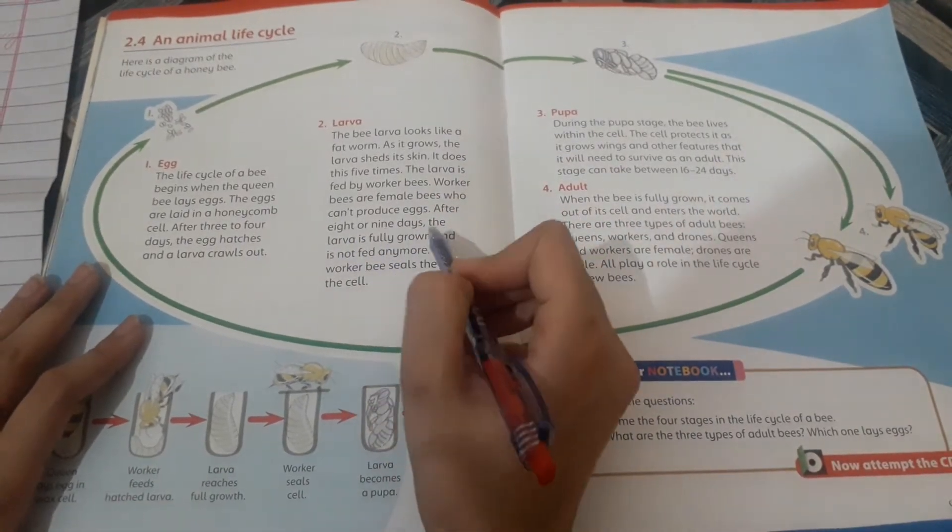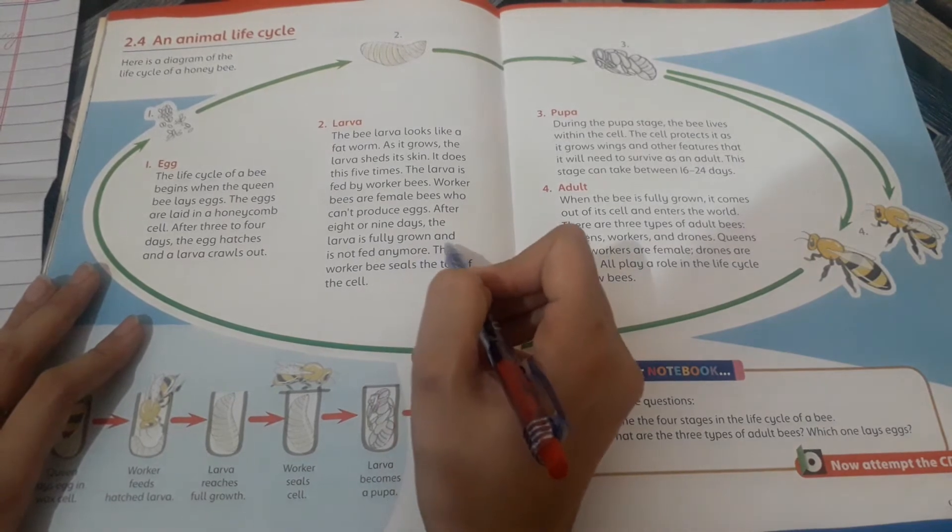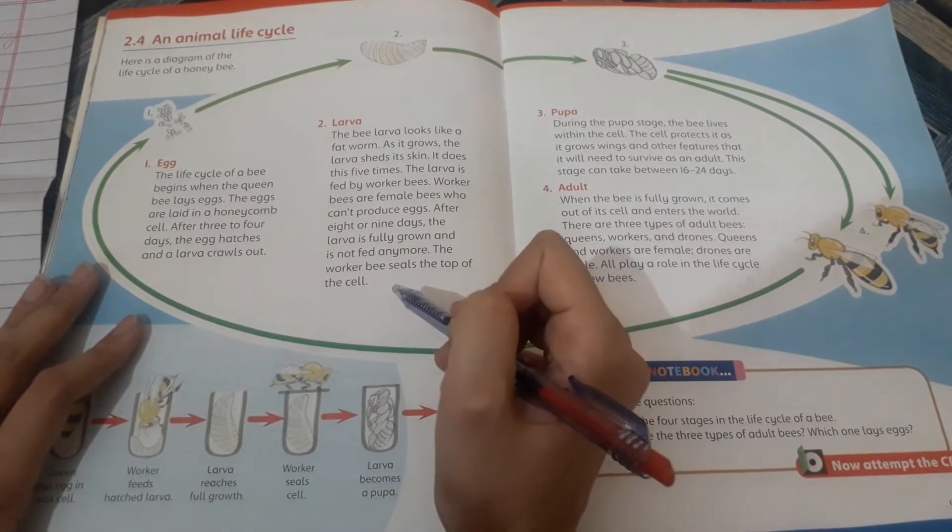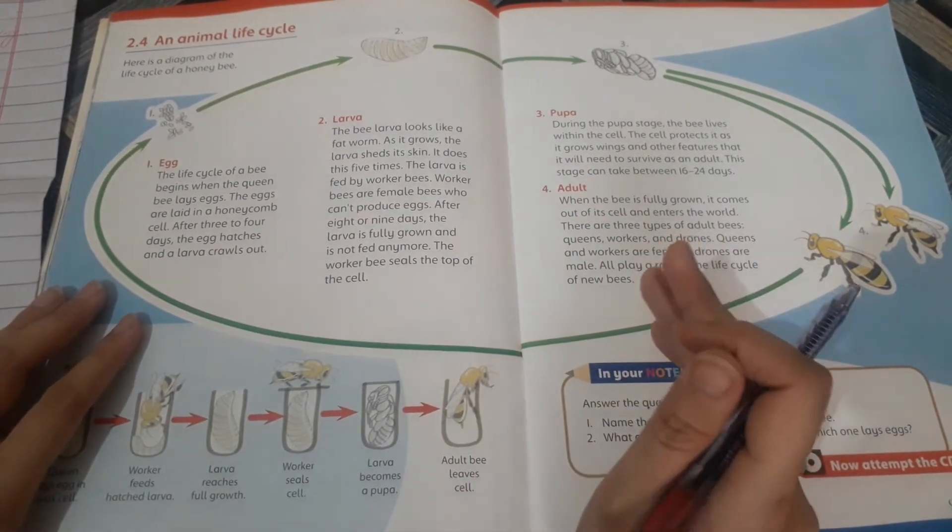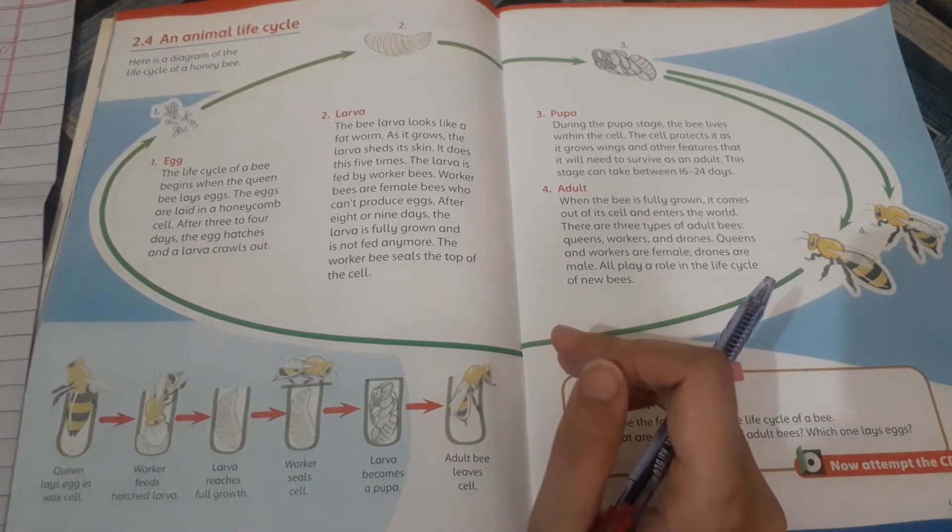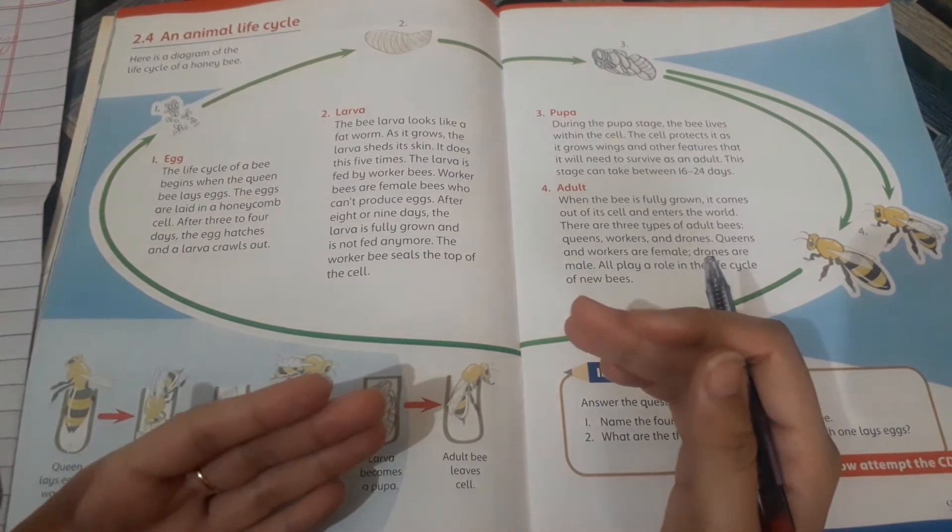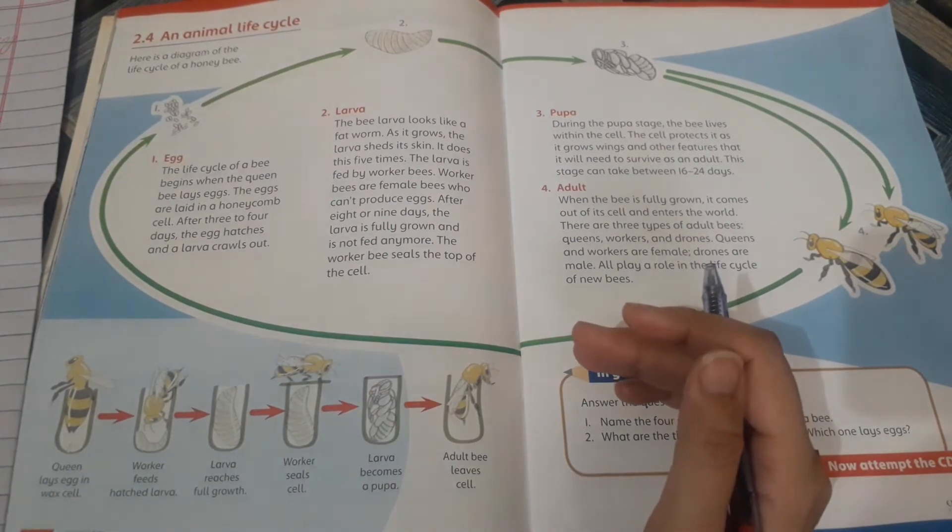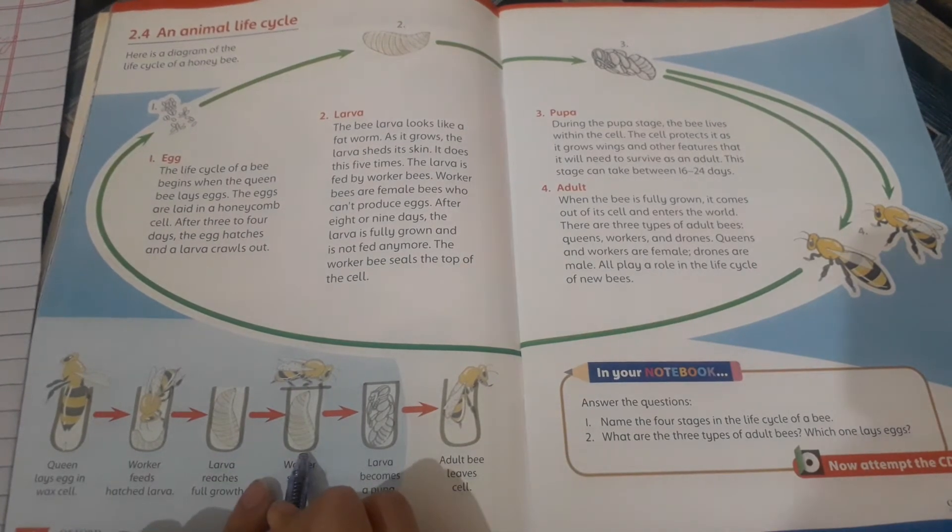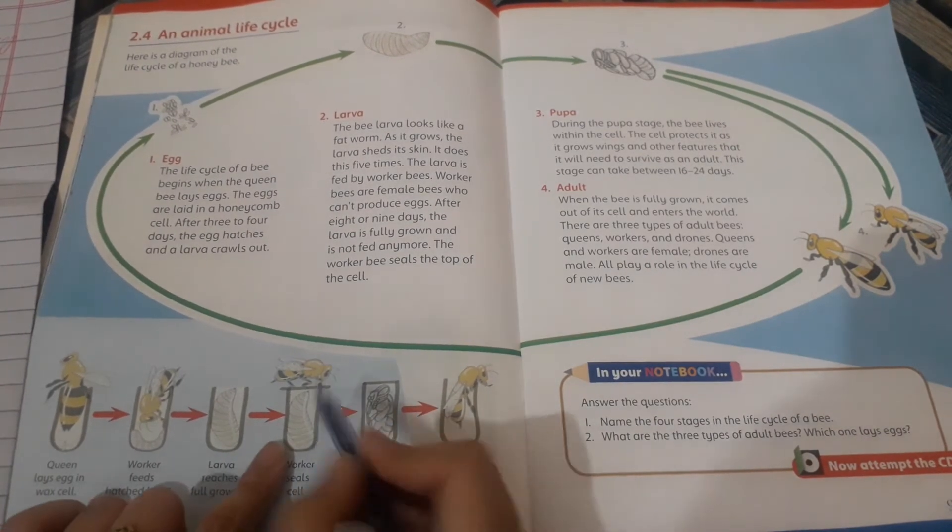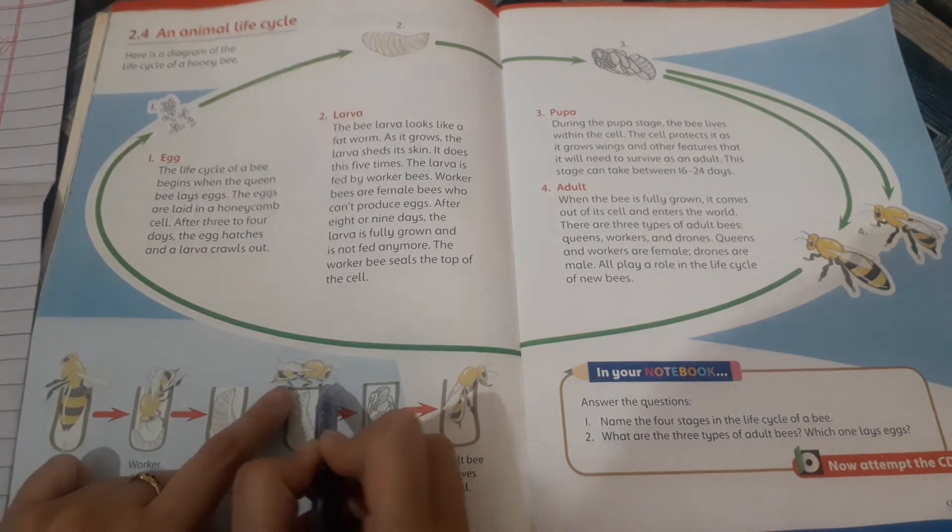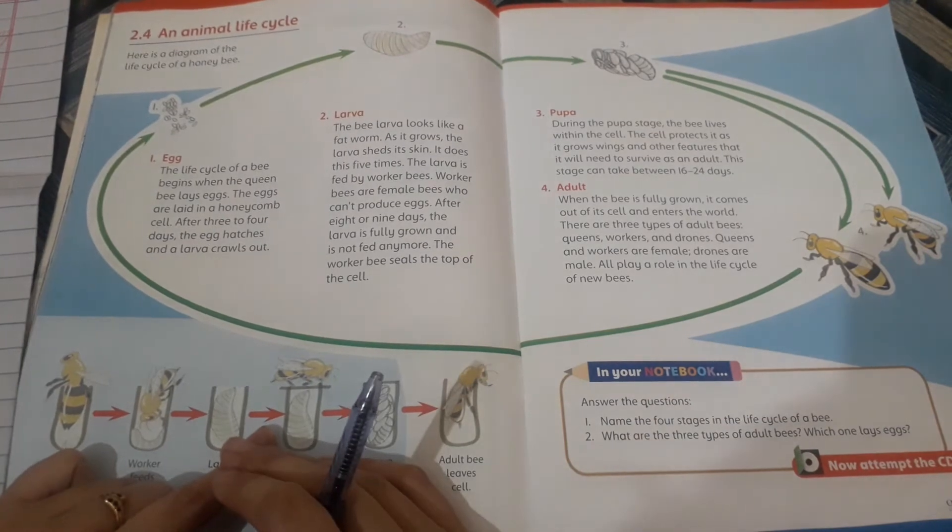After eight or nine days, the larva is fully grown and is not fed anymore. The worker bee seals the top of the cell. After eight to nine days, the larva is fully grown up and does not need any feed. The worker bee seals the top of the cell, just like you can see here.